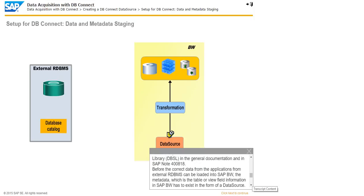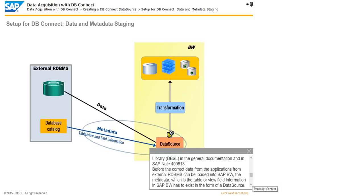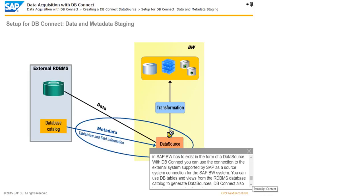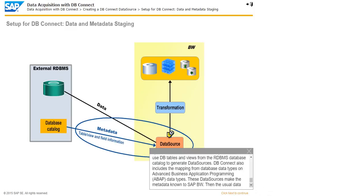Before the correct data from applications in external RDBMS can be loaded into SAP BW, the metadata — that is, the table or view field information in SAP BW — has to exist in the form of a data source. With dbConnect, you can use the connection to the external system supported by SAP as a source system connection for the SAP BW system. You can use database tables and views from the RDBMS database catalog to generate data sources. dbConnect also includes the mapping from database data types to ABAP data types. These data sources make the metadata known to SAP BW, and then the usual data acquisition process of SAP BW comes into play.